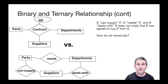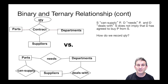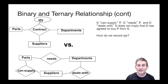Let's look at another example of binary versus ternary relationships. In this example, unlike the last one, the ternary relationship is doing what we want. Starting with the upper left: we have a 'contract' relationship set that connects parts, suppliers, and departments. There's a contract which specifies a quantity of a part that a supplier is providing to a department — departments are contracting with suppliers to get so many parts. That's our simple ternary relationship set.